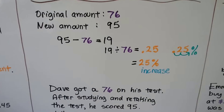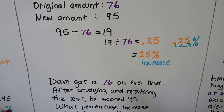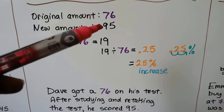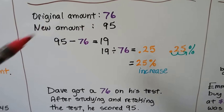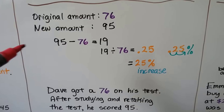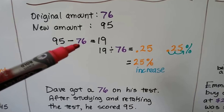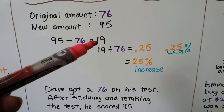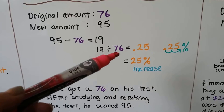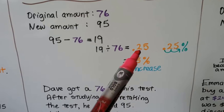The original amount is 76 and the new amount is 95. Because the new amount is larger, we know it's going to be a percentage increase. We find the difference: 95 minus 76 equals 19. We take that 19 and divide it by the original amount of 76, and we get 0.25.